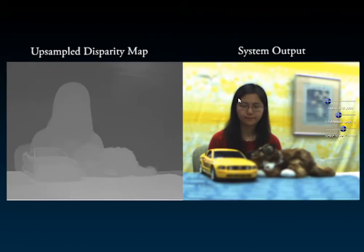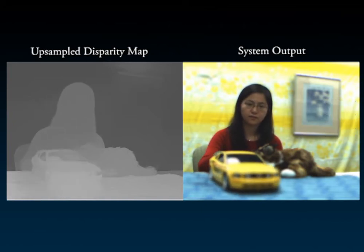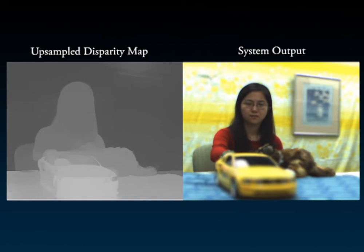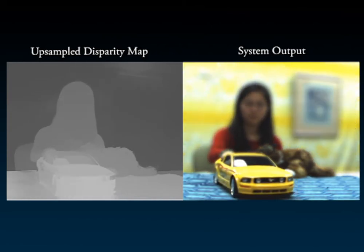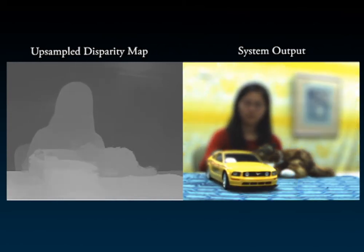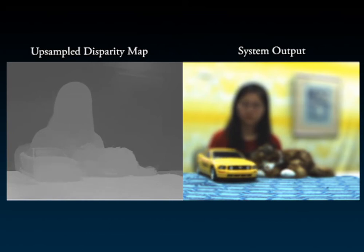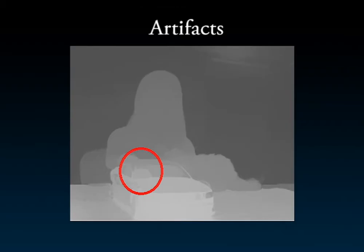Here we show the recovered disparity map of the previous toy car scene. We are able to produce high quality results at over 30 frames per second. Notice how our upsampling scheme preserves the edges around the head and the shoulders of the girl. We do however observe some artifacts in highly specular areas, such as the lower left corner of the car's windscreen.